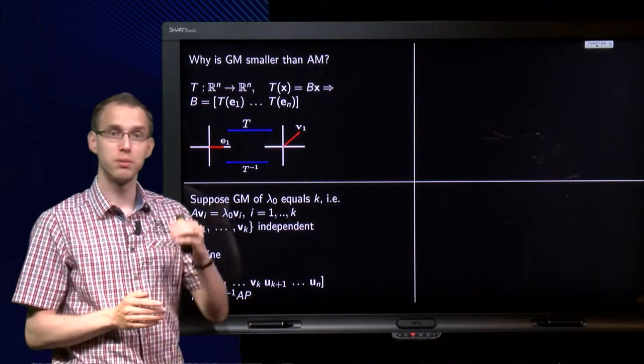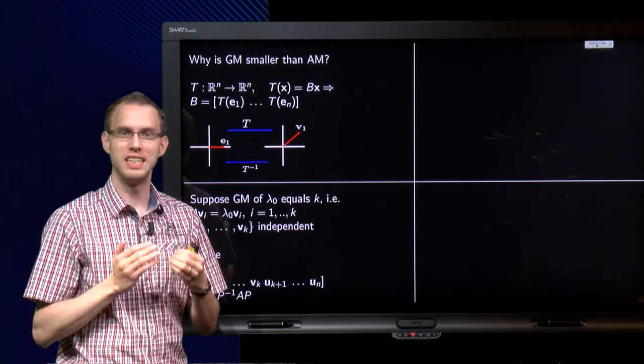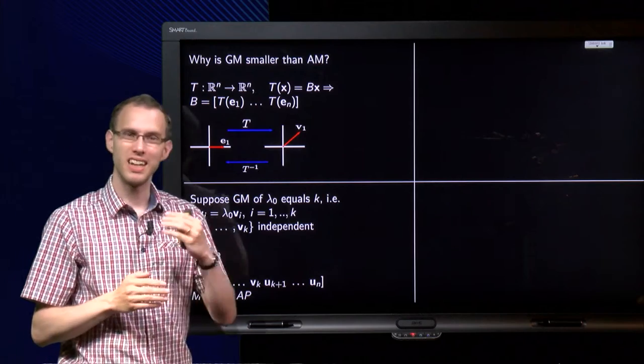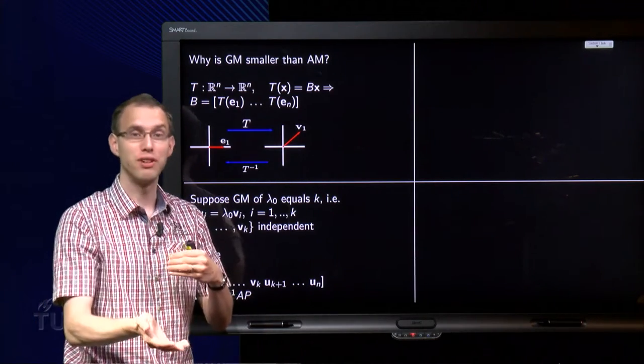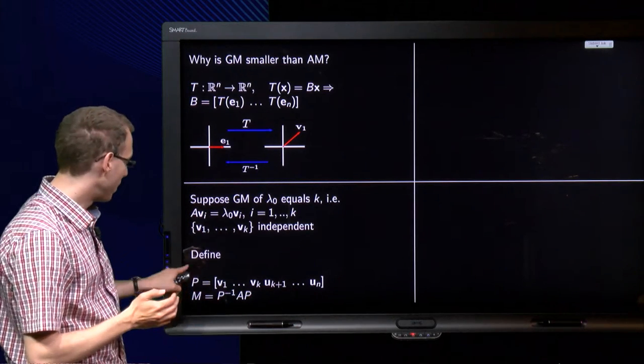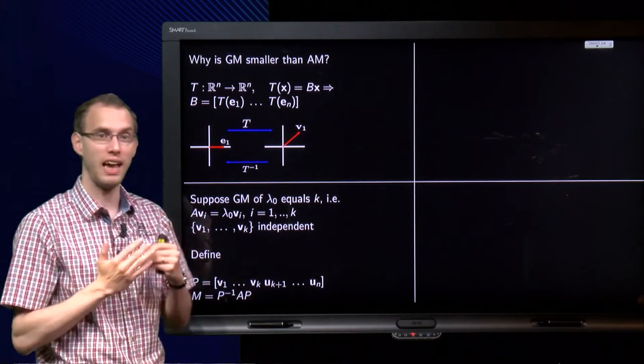And then we compute M equals P inverse times A times P. Why? What does this have to do with eigenvalues? Well, as you see, the matrix M is similar to the matrix A. That means that the eigenvalues of A and of M are the same. And as it turns out, it will be easier to say something about the eigenvalues of M than to say something about the eigenvalues of A.